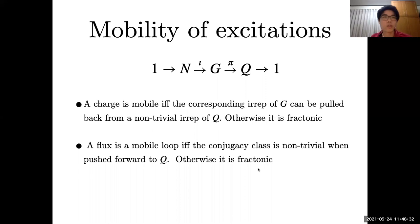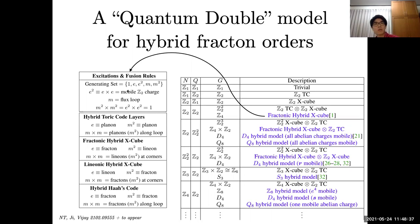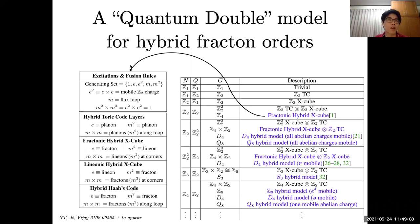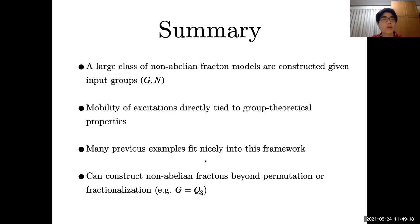In conclusion, we have a quantum double model for hybrid fracton orders, giving a very general construction for many hybrid fracton models, both abelian and non-abelian. One can obtain different non-abelian models with non-abelian fractons but different mobile charges. Some models have appeared in the literature, while others highlighted here have not been constructed yet. For each case, one can also choose different fracton orders to hybridize with and get different models. This is a quick summary of our results, and there are several open questions remaining. Thank you.